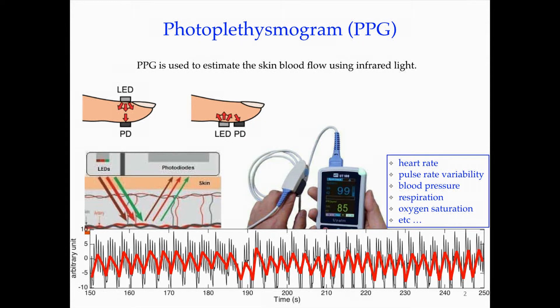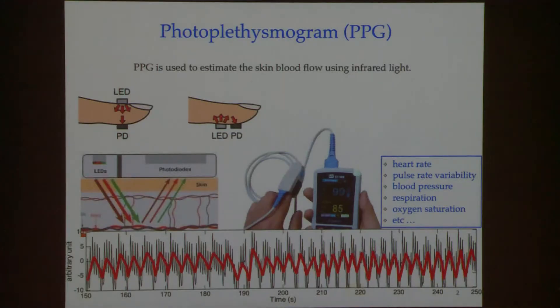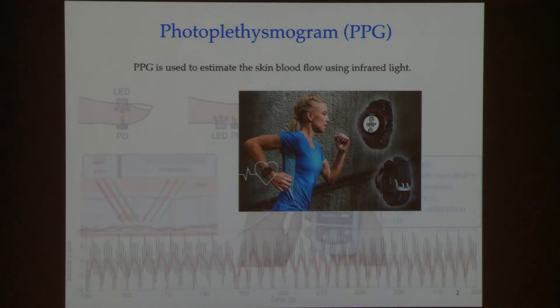The respiration is quite simple: there is a slow varying oscillation that is actually respiration, and the fast varying spikes are the cardiac cycles.